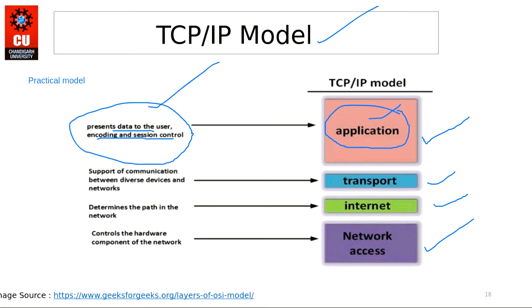The TCP/IP Application layer is a more practical model — a single layer can handle all functions without needing separate layers like in OSI. The Transport layer provides communication between diverse devices and networks, either via TCP or UDP. When data arrives from the Application layer, it is divided into segments, and a TCP or UDP connection is provided for devices to communicate.